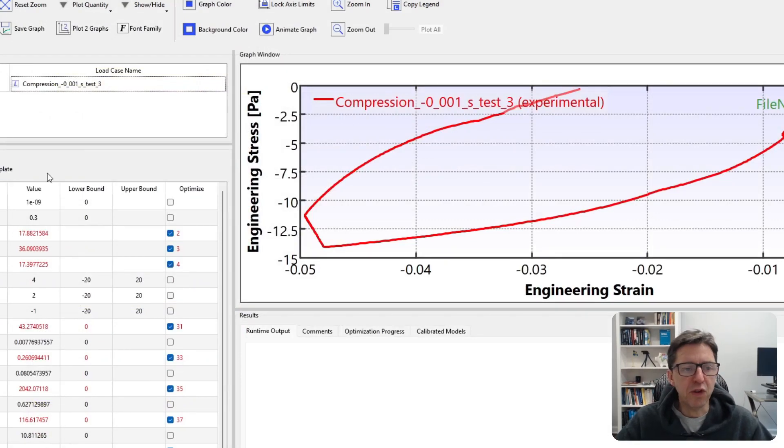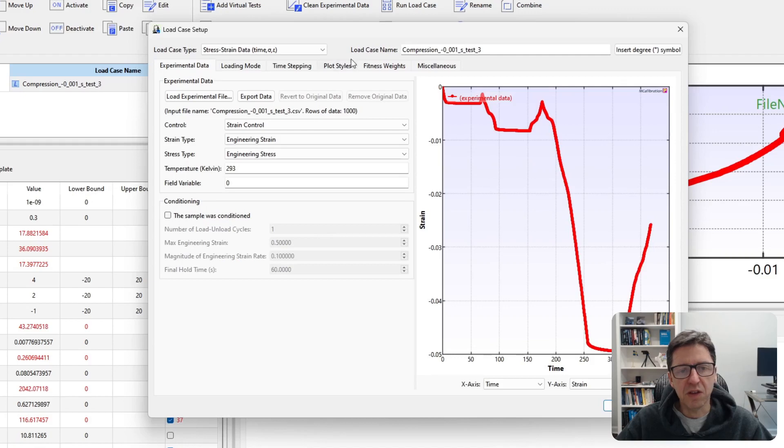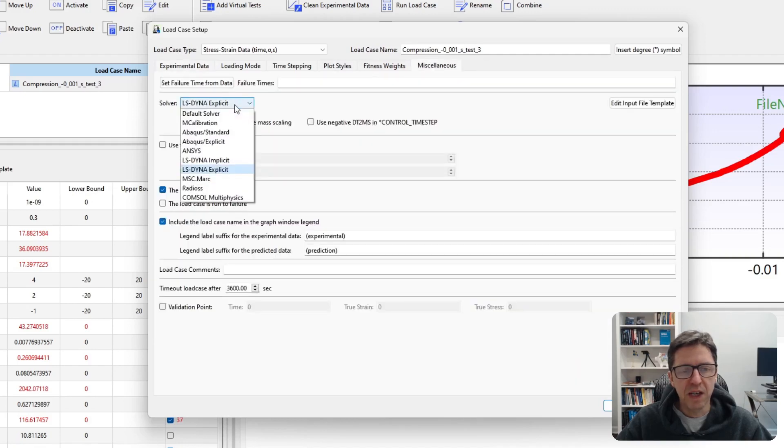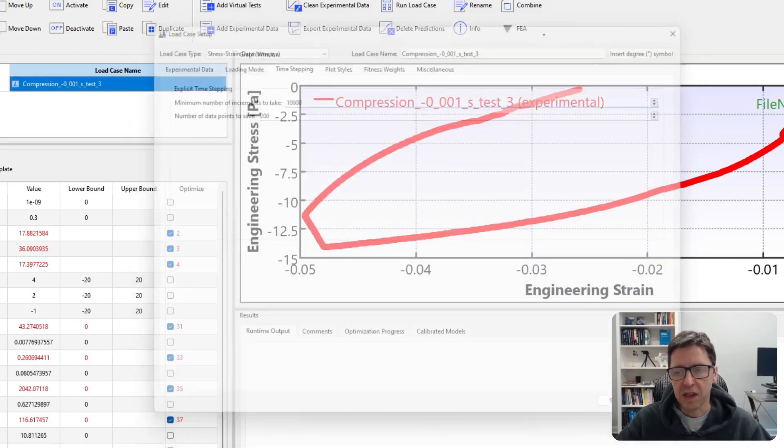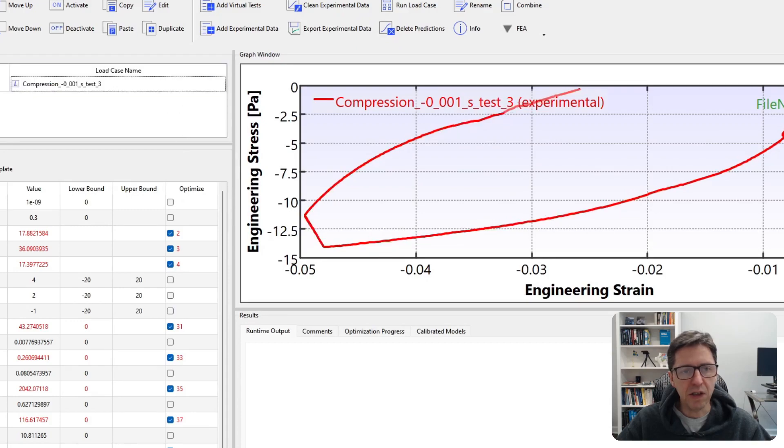Well, there's one thing you should do first, and that is in the load case definition. You should specify what FE solver you want to use. I'm going to use LS Dyna explicit. I will use mass scaling for this because it's an explicit simulation under long times. And I'm going to say I use 10,000 increments in the calculations.